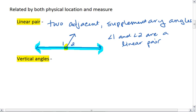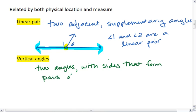And lastly, we have vertical angles. Vertical angles are a little trickier to define. Vertical angles are two angles with sides that form pairs of opposite rays.